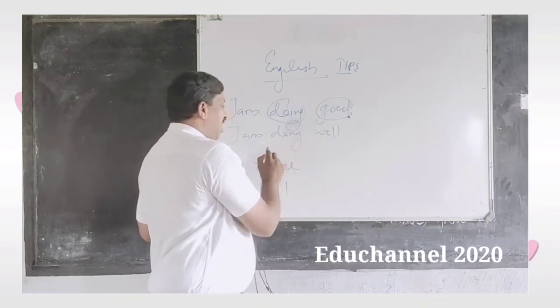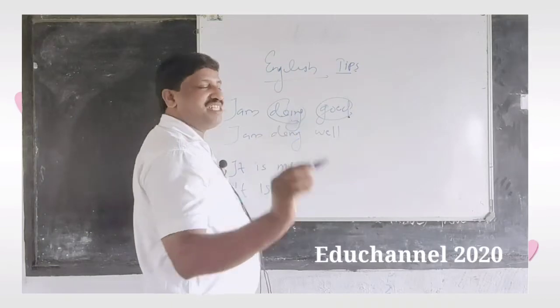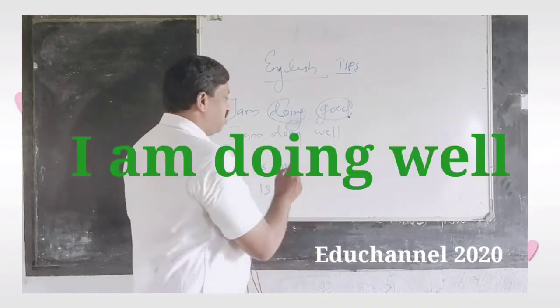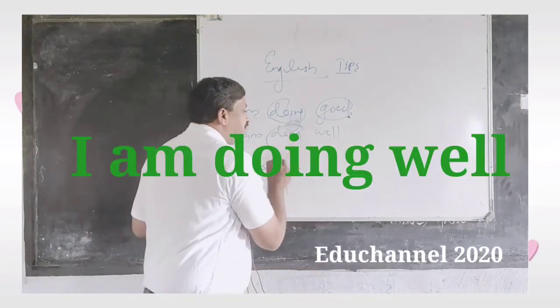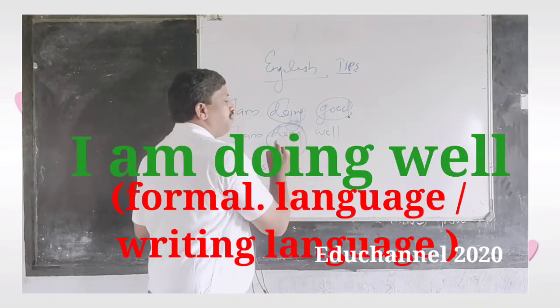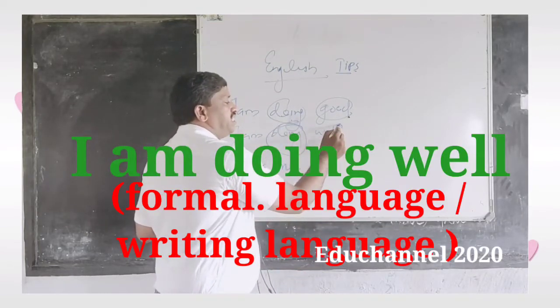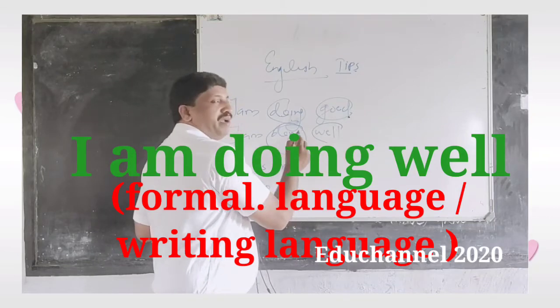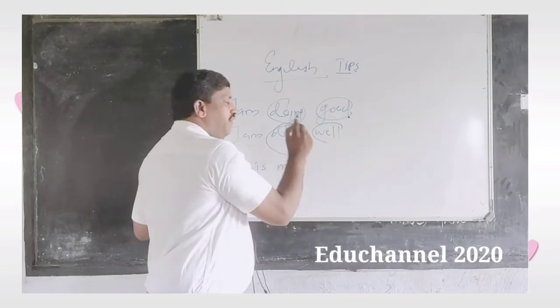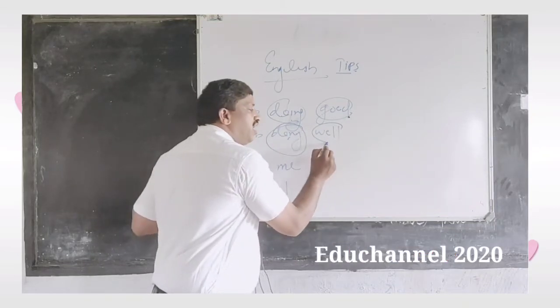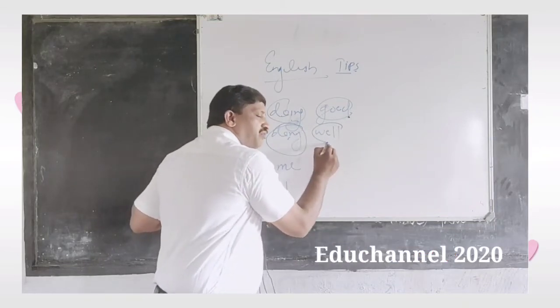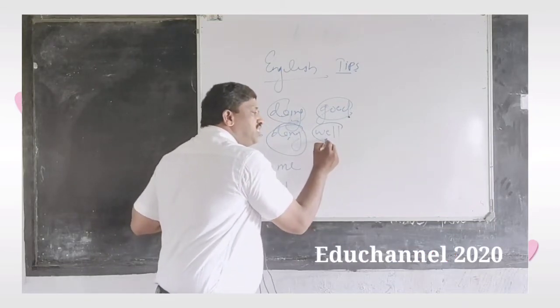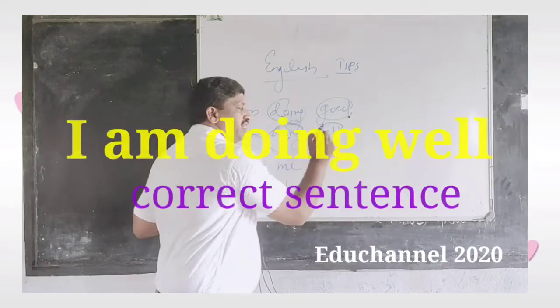'I am doing well' is the correct sentence because 'doing' is a participle — a type of verb — and 'well' is an adverb. In English, we must use an adverb after a verb, so 'I am doing well' is the right sentence.